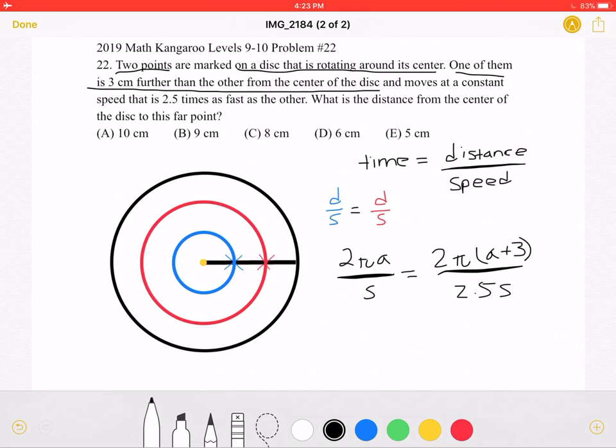Let's let this yellow dot represent the center. If we mark the distance between the center to the blue X as being A, then the distance between the center and the red X must be equal to A plus 3. And let's let the blue circle represent the pathway of the point marked as blue X and the red circle represent the pathway of the point marked as a red X.